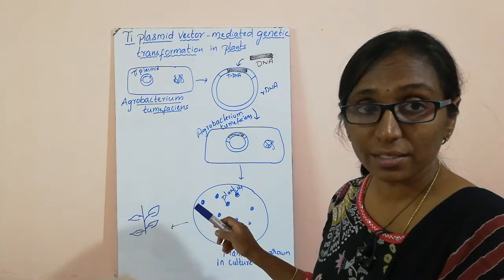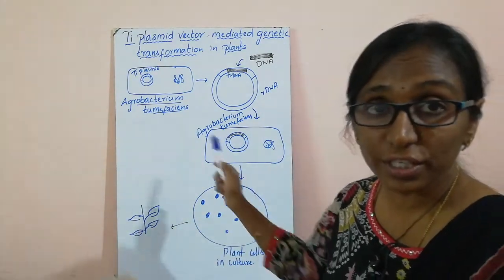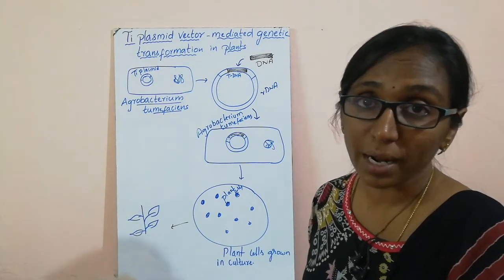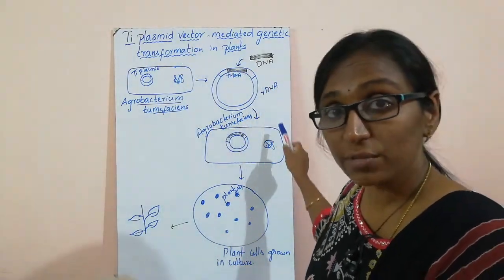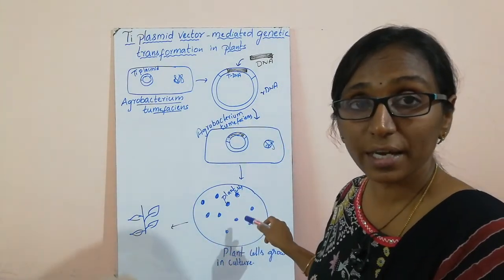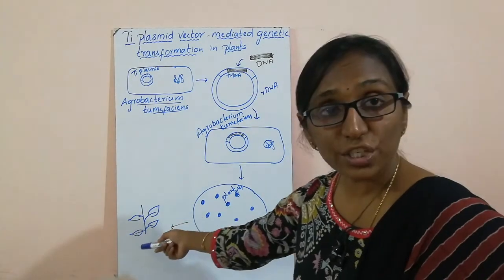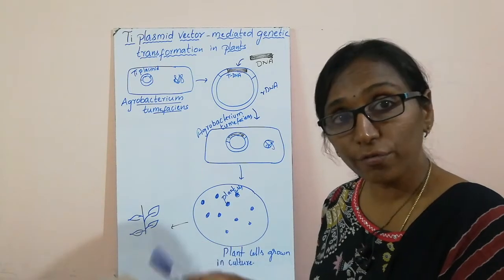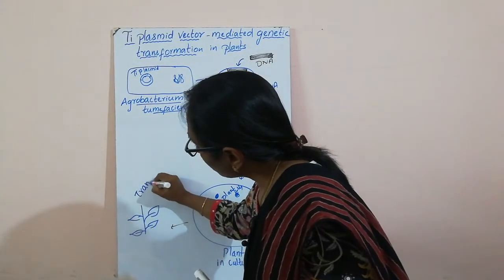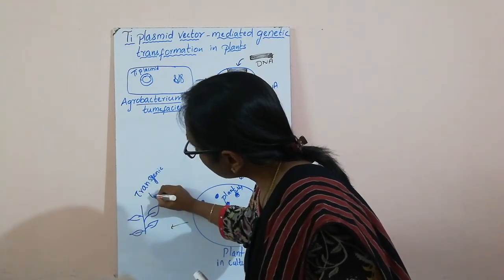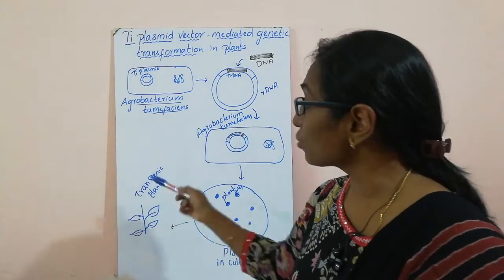The T-DNA is no longer causing harm to the plant cells — it is not at all pathogenic. The plant which is developed by introduction of a foreign gene into the T-DNA into plant cells is called a transgenic plant. Any plant which is carrying the foreign gene or has been inserted with a foreign gene is termed a transgenic plant.